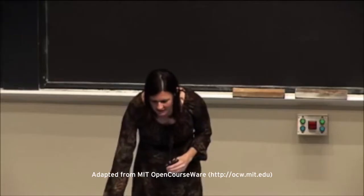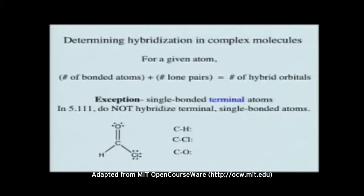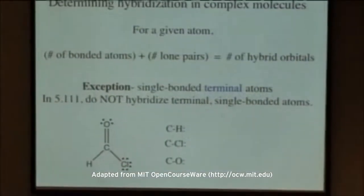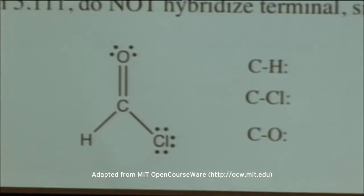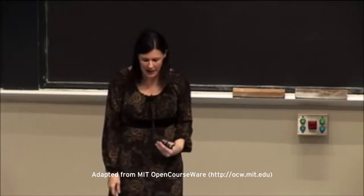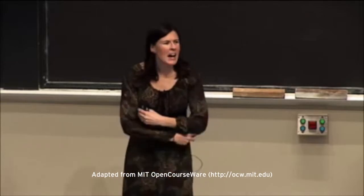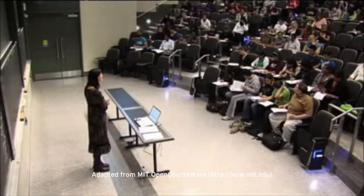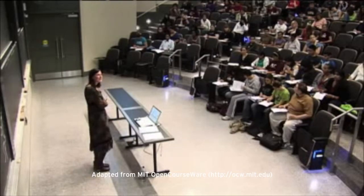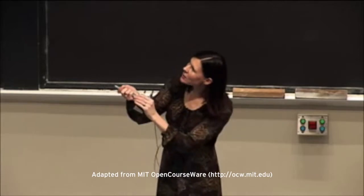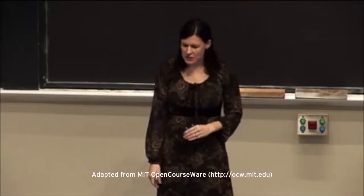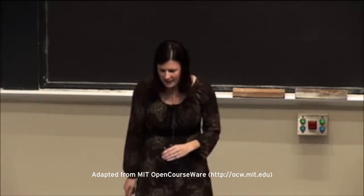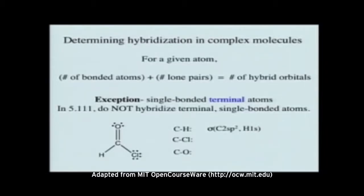We can illustrate this with an example of formyl chloride. The carbon is our central atom with three terminal atoms — two are single bonded, so we won't hybridize those, and one is double bonded to oxygen, so we will hybridize that one. The carbon is bonded to three different atoms and has no lone pairs, so its hybridization is sp2. The C-H bond is a sigma bond: carbon 2sp2 overlapping with hydrogen 1s.